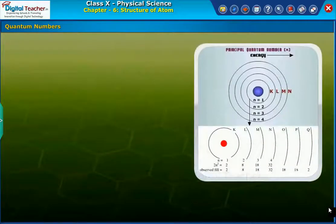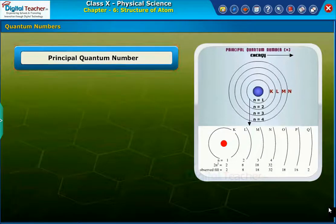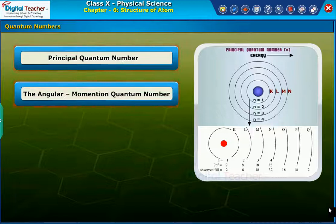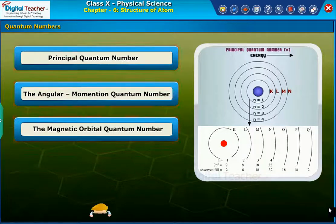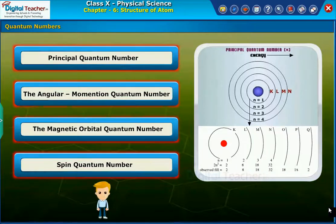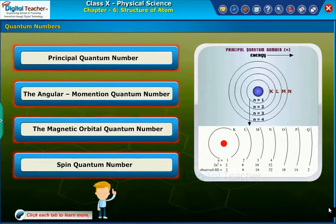Let us know about the quantum numbers. There are four main types of quantum numbers. They are principal quantum number, the angular momentum quantum number, the magnetic orbital quantum number, and spin quantum number. Click each step to learn more.